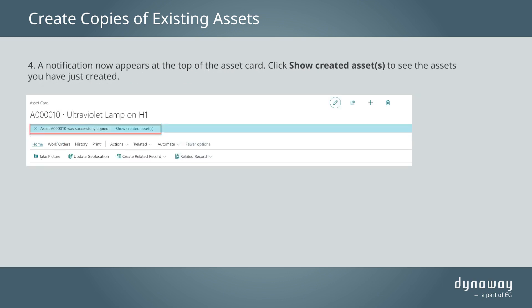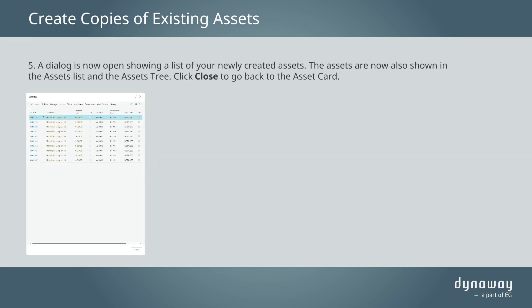A notification now appears at the top of the asset card. Click Show Created Assets to see the assets you have just created. A dialog is now open showing a list of your newly created assets. The assets are now also shown in the assets list and the assets tree. Click Close to go back to the asset card.